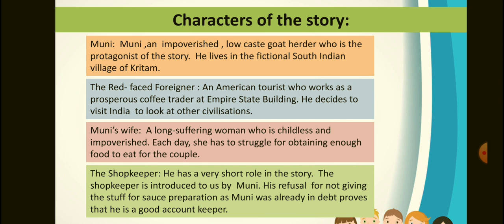So let us know about the characters in the story. First is Muni, an impoverished low-caste goatherder who is the protagonist of the story. He lives in the fictional South Indian village of Kritham. The red-faced foreigner is an American tourist who works as a prosperous coffee trader at the Empire State Building. He decides to visit India to look at other civilizations.